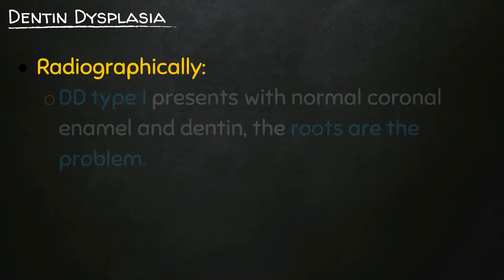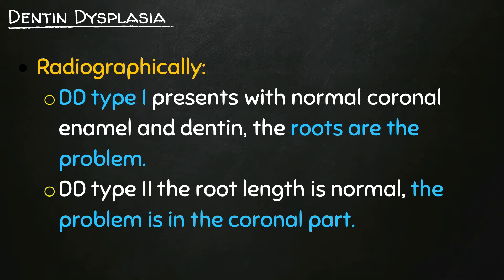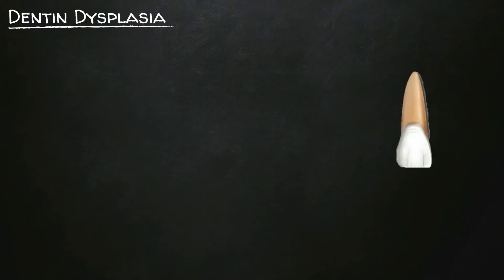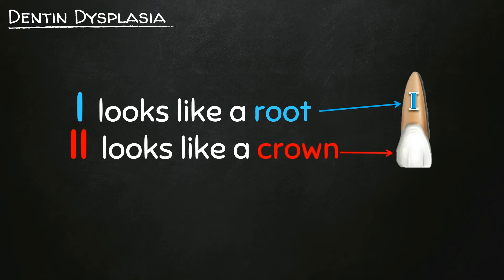Another radiographic characteristic: Denton dysplasia type 1 presents with normal coronal enamel and dentin, while the roots are the problem. In Denton dysplasia type 2, the root length is normal while the problem is in the coronal part. To remember this, look at the number 1 — it looks like a root, thin just like the root. The number 2 looks like the crown; if we place it on the tooth it fits perfectly. So in the exam, just make a quick sketch: the 2 goes in the crown and the 1 goes in the thinner root part.